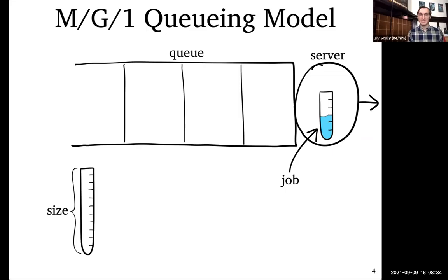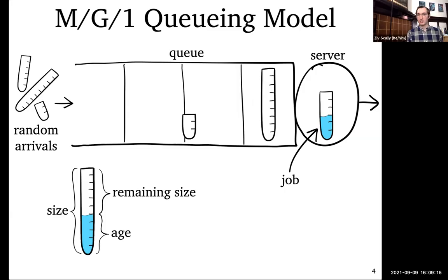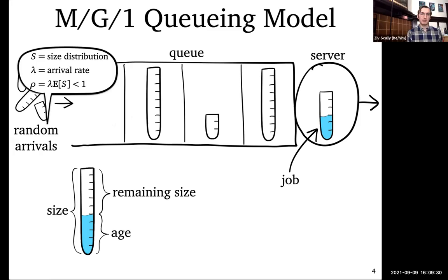At any moment we might have made some progress on a job. We call that amount of progress the job's age — the height of the water, the time we've served it so far — and the rest is called remaining. In queuing theory we model things stochastically because in real large-scale systems, things happen more or less at random. In the MG1 model, there's a size distribution S, average arrival rate lambda, and arrivals come as a Poisson process, giving system load equal to lambda times E[S].